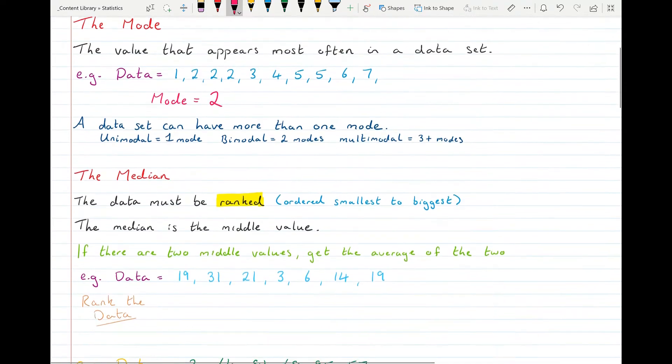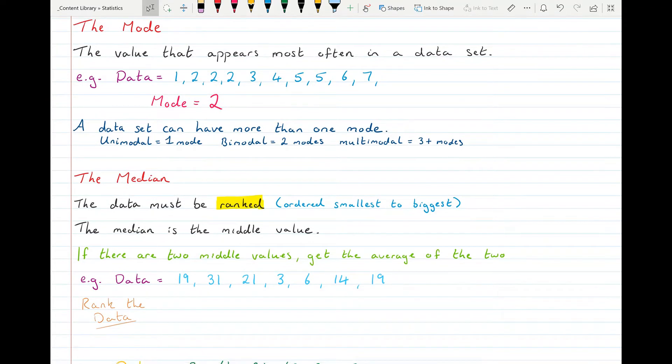The median is a second type of average. So the median, in order to be used, first you have to do what's called ranking the data, which means you need to order it from smallest to biggest. That's very important. You need to rank it first because we're looking to try and find the middle value. So the median is the value that's in the middle. So if there are two middle values, then we'll get the average of the two.